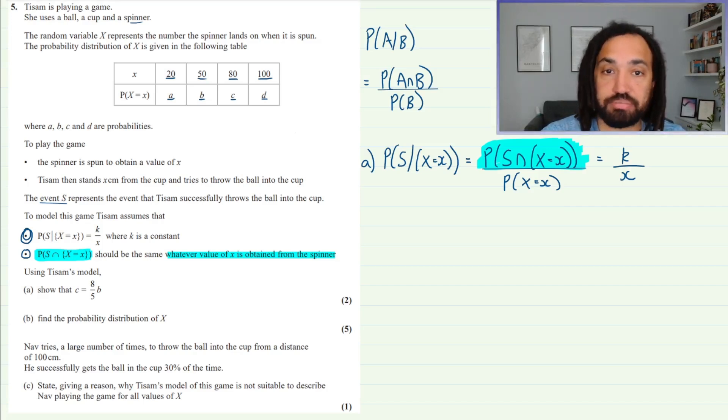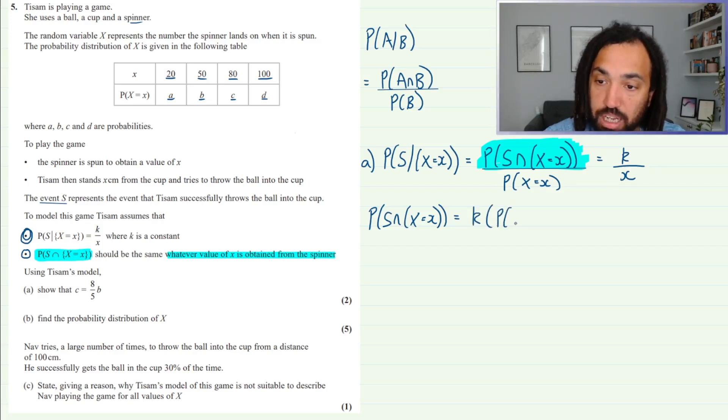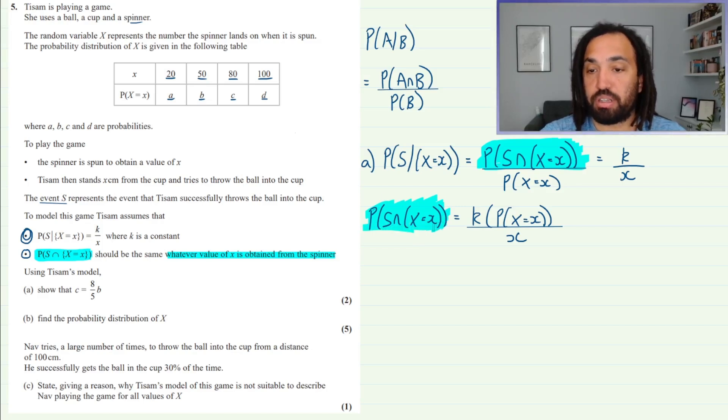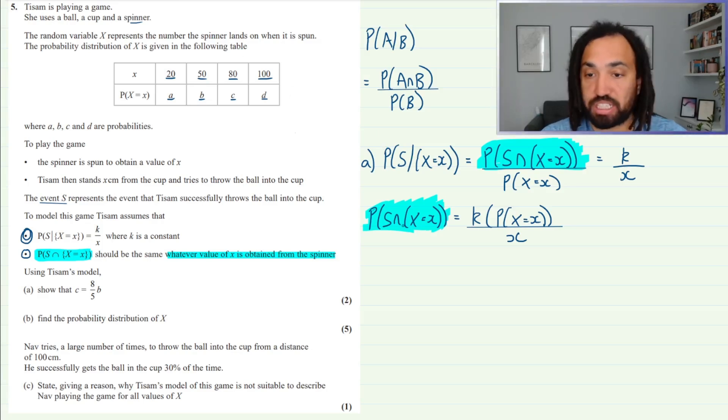So let's make that the subject and see what we're left over with once we've made that the subject of this equation. So we have this, this is the blue bit, and we're going to move this denominator up to the other side. So that gives me K multiplied by the probability of X equals X, and that's all over little x. Okay, so what that means is because this, we're told this blue part is going to stay constant, this is not going to change no matter what value of X we choose. Then whatever X we substitute in, they should all equal the same thing because the blue bit is going to stay exactly the same.